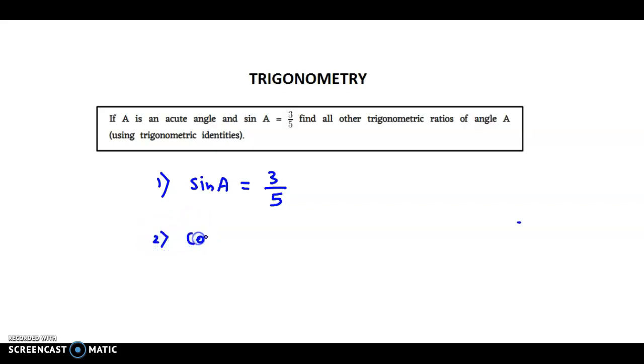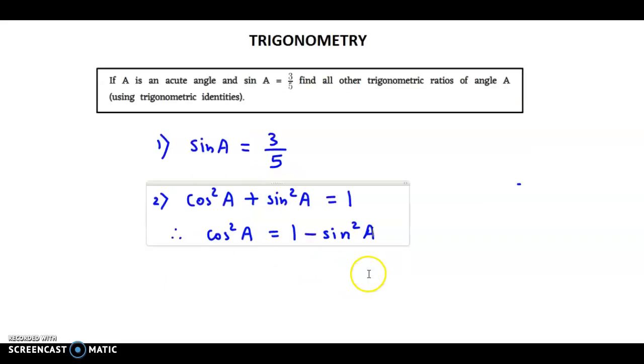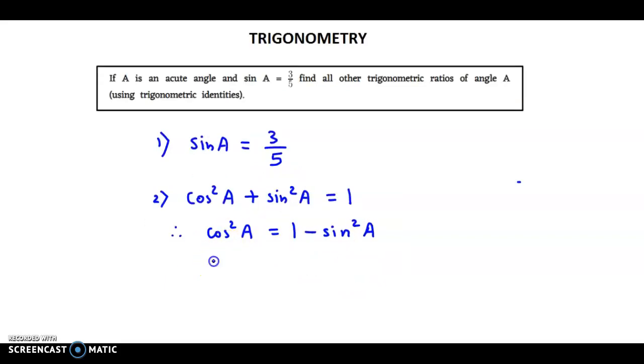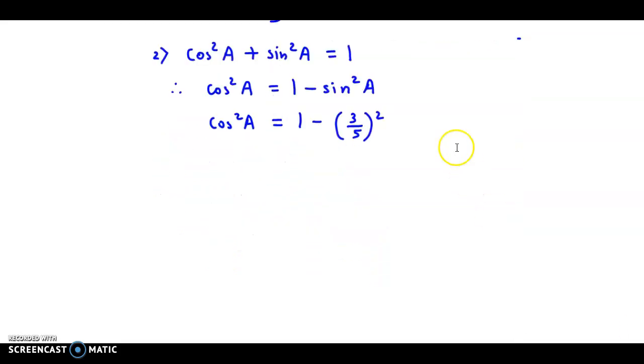We know the relation that cos square A plus sin square A is equal to 1. So, therefore, we have cos square A is equal to 1 minus sin square A. Now, we substitute the value of sin A in this equation. So, we obtain cos square A is equal to 1 minus 3 by 5 the whole square. Now, 3 by 5 the whole square gives us 9 by 25.